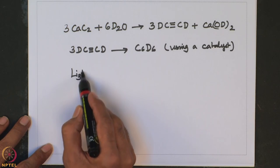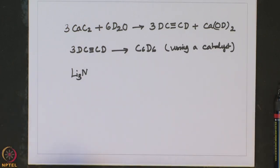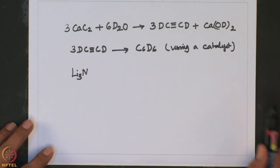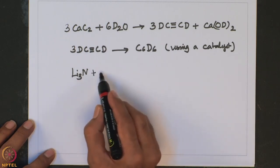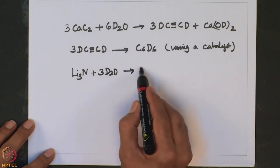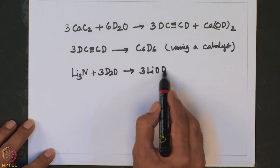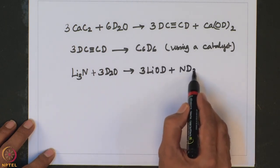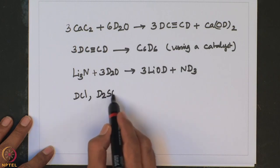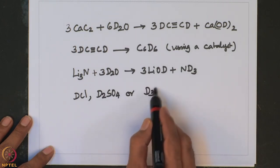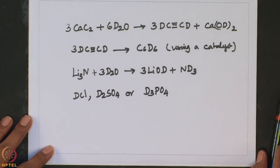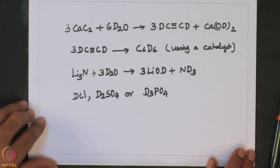Lithium nitride is also very reactive and readily undergoes hydrolysis to form lithium hydroxide and ammonia. Lithium nitride treated with D2O forms lithium deuteroxide plus ND3. So if you want to make deuterated ammonia, you can conveniently prepare it by treating lithium nitride with D2O. One can also make other compounds such as DCl, D2SO4, or D3PO4 using appropriate conditions with D2O as the major source of deuterium.